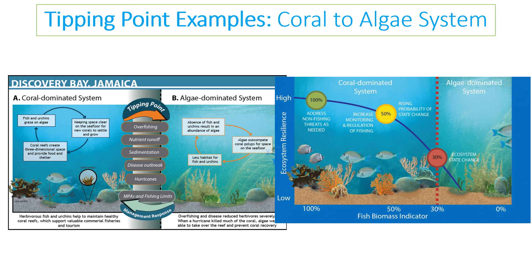When coral reefs die past that threshold it is very difficult to regenerate them, and they become covered in algae. In Jamaica, a coral-dominated system has been pushed across tipping points by overfishing, nutrient runoff causing eutrophication, sedimentation, disease outbreaks, and hurricane damage. Studies suggest that when fish biomass drops to about 30% of its current level, the coral tends to become an algae-dominated system.